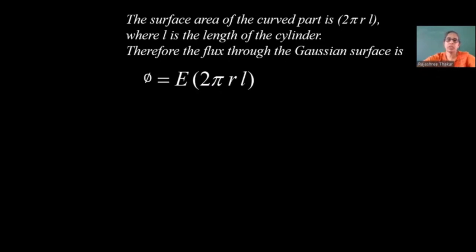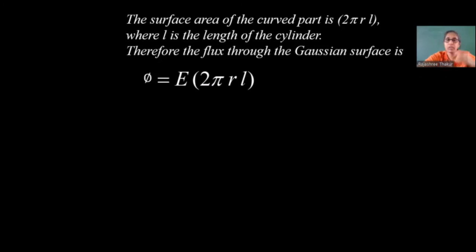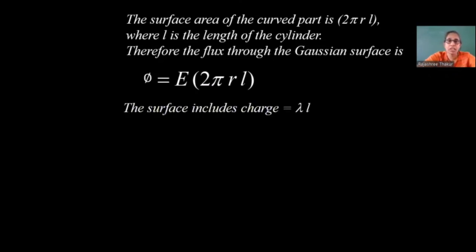Now, using Gauss's law, we need to find the charge enclosed inside this Gaussian surface. The cylindrical surface is an imaginary one. The linear charge density on the wire is lambda, and the length of the wire we have considered is L, so the charge enclosed is lambda × L. Therefore, the surface encloses charge lambda L, and from Gauss's law, the flux through this surface equals Q divided by epsilon_0, which equals lambda L divided by epsilon_0.